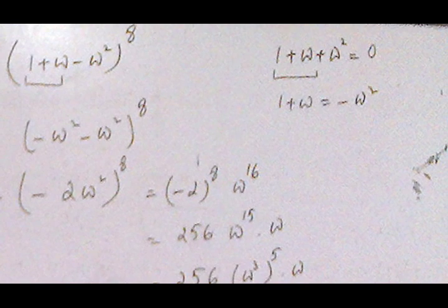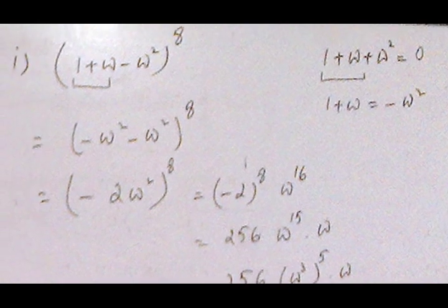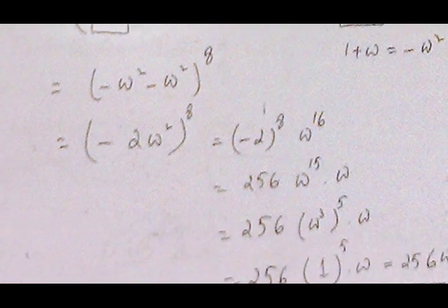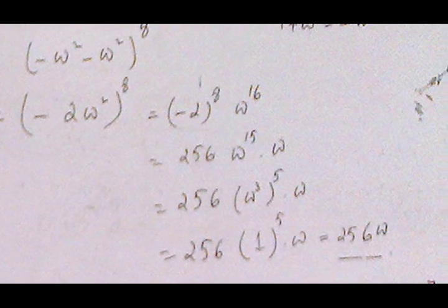Using the property 1 + ω + ω² = 0, any two roots on the left-hand side give the third on the right. From this property, 1 + ω = -ω². We add these values and take the 8th power of both sides, so (-ω²)⁸ = 2⁸ = 256, and we have ω¹⁶ which we convert into a multiple of 3.